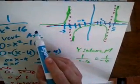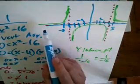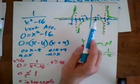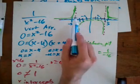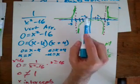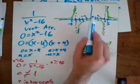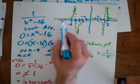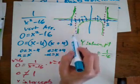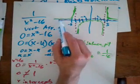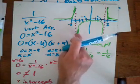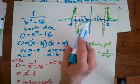The last thing is a quick discussion about domain and range. Our domain — meaning what the x-values can be — goes from negative to positive infinity, but it cannot be negative 4 or positive 4. So the domain is all reals except negative 4 and positive 4. Our range goes to positive infinity and negative infinity, but we have the horizontal asymptote at 0, so the range is all reals except 0.